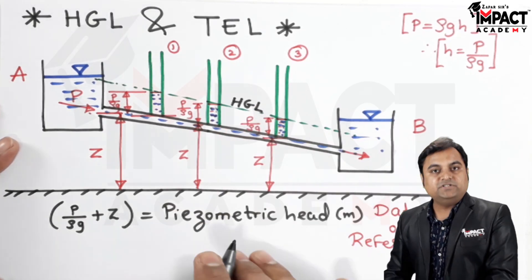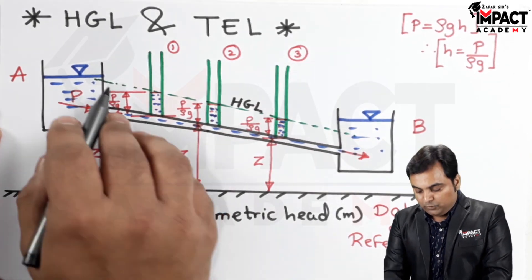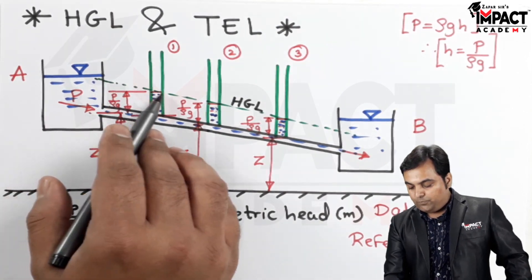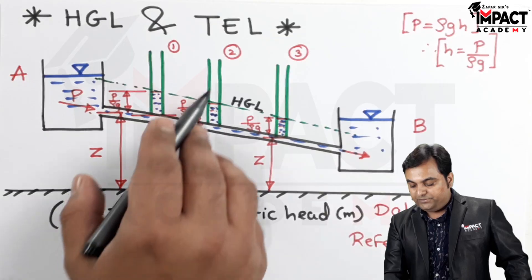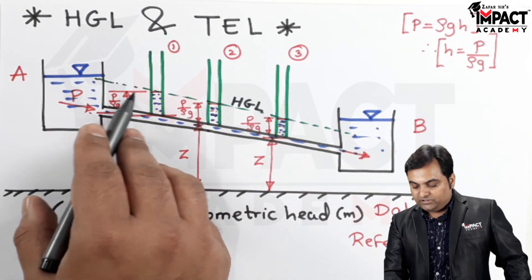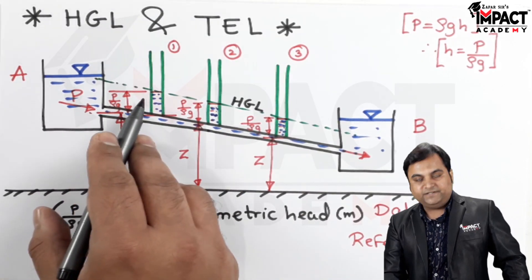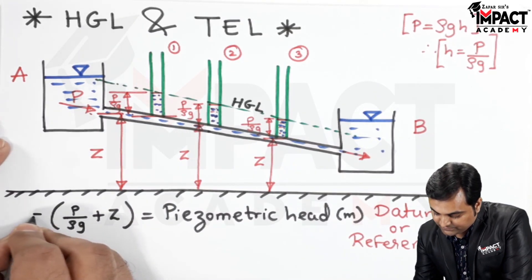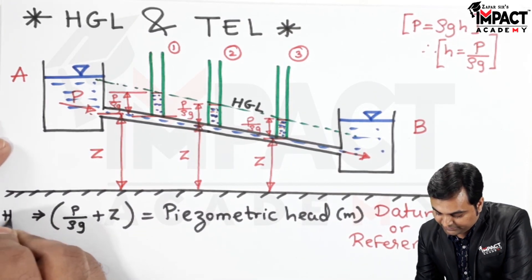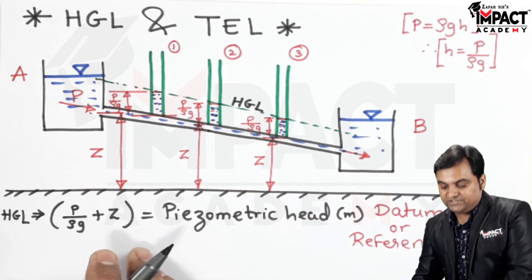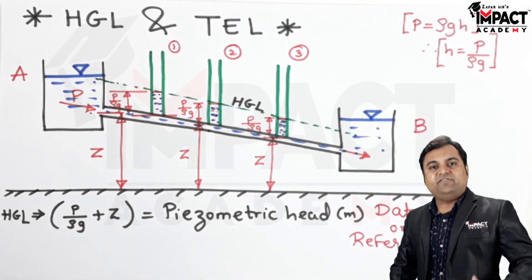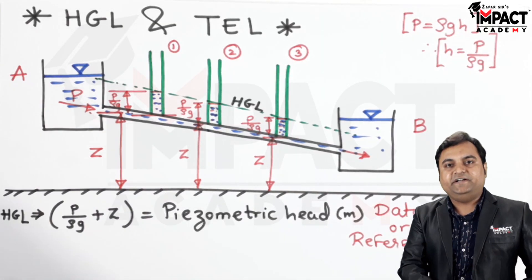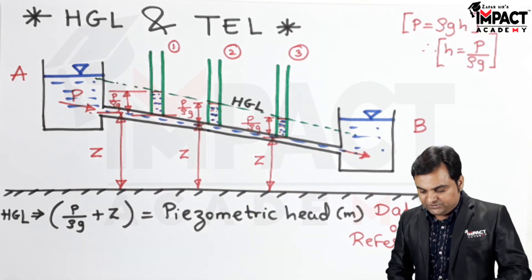In other words, HGL can be plotted as an imaginary line joining the top ordinates of these piezometers, considering the pressure head and the potential head — it gives the sum of both of them. This is the hydraulic gradient line called as HGL. Now, in this HGL if we add the velocity head, also called as the kinetic head, then it becomes the total energy line.